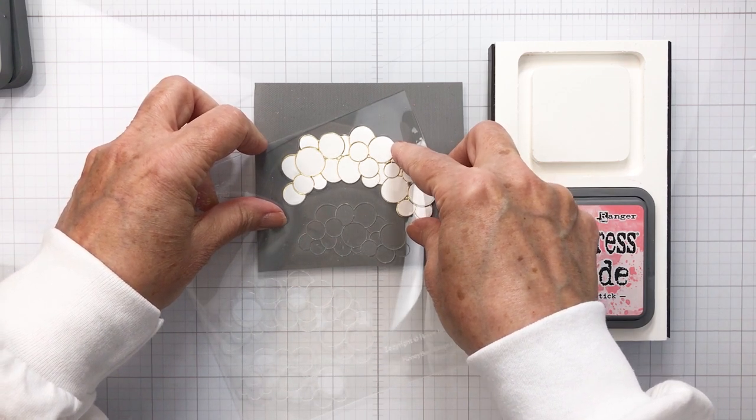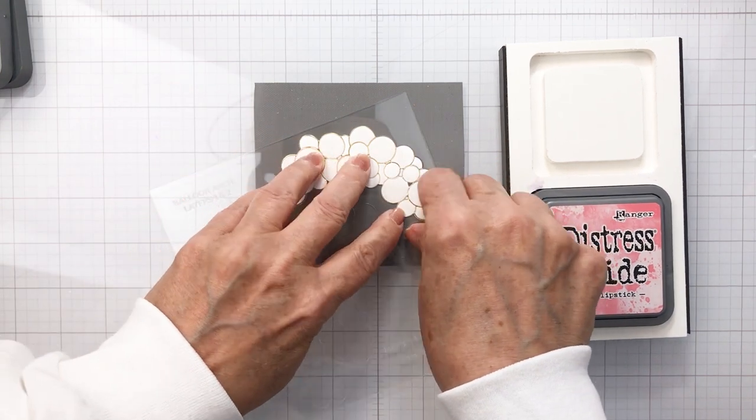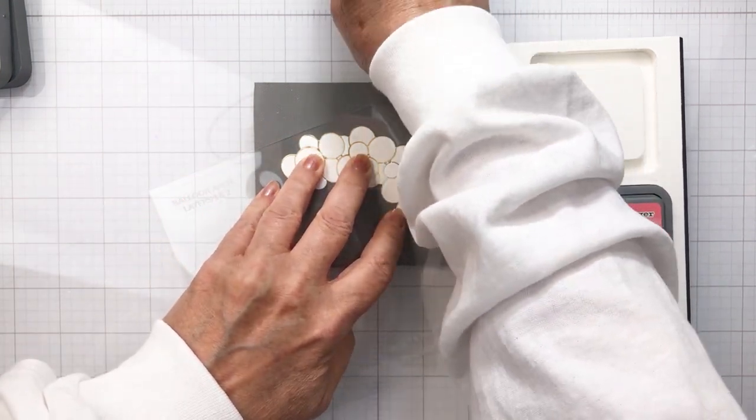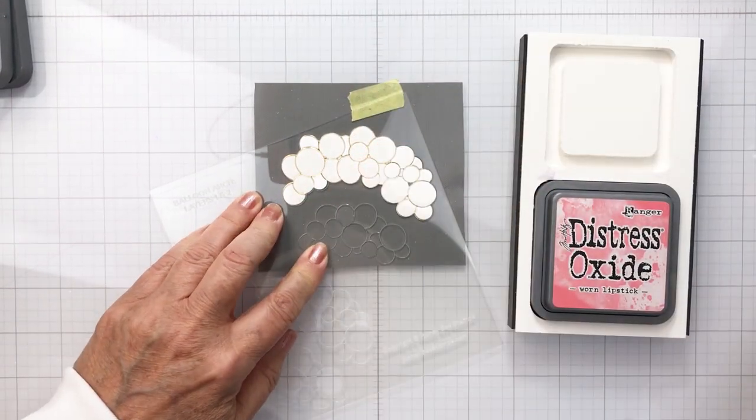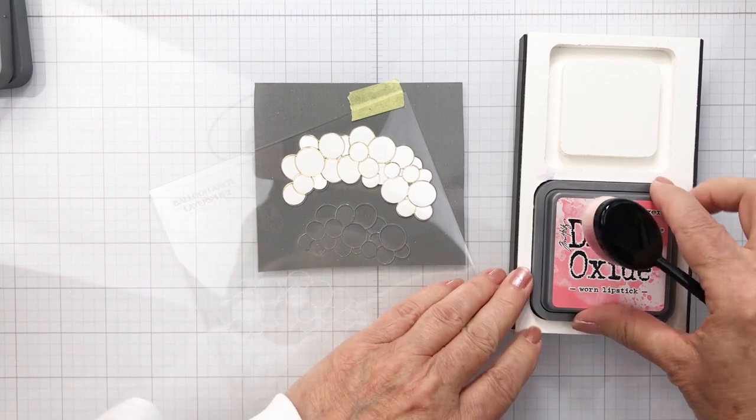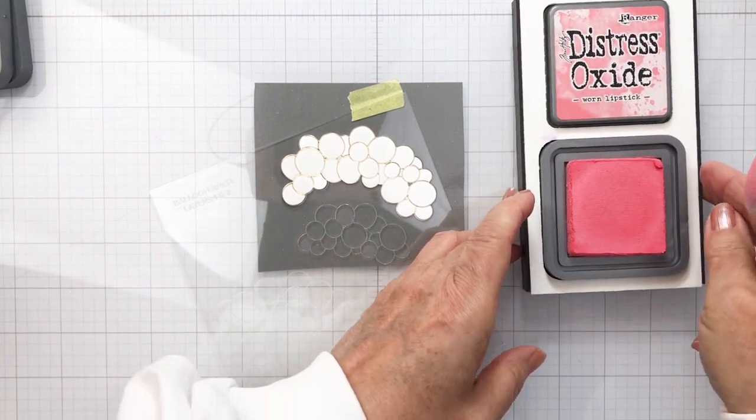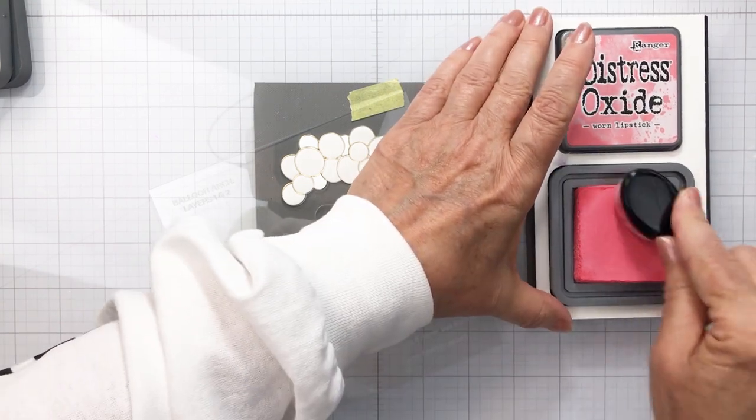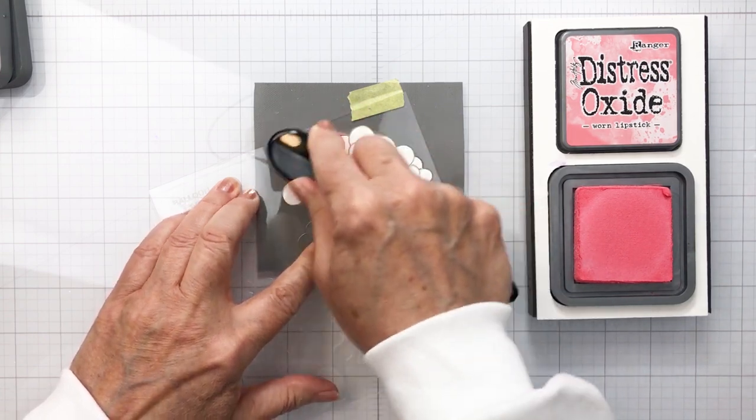This largest balloon arch piece that I have die cut out here has two coordinating stencil openings on this first layering stencil, and you're going to see me adding some color. I added the stencil onto my mat here with a little bit of adhesive, with all of the lines lined up with the actual die cut piece.